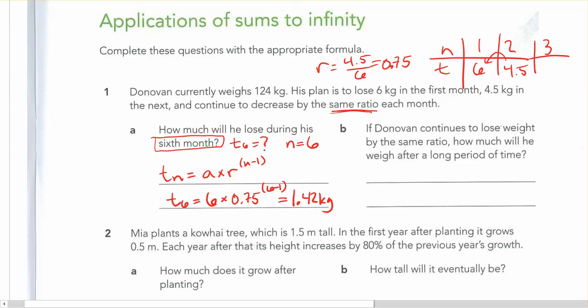If Donovan continues to lose weight by the same ratio, how much will he weigh after a long period of time? So again, a long period of time is not saying, how much is he going to have lost over the first five months? We're saying, how much is he going to lose if he does this forever? And if you notice, it's getting smaller each time. So eventually, he's not going to be losing very much weight. He'll stabilize off. But here, we know it's going to be the sum to infinity.